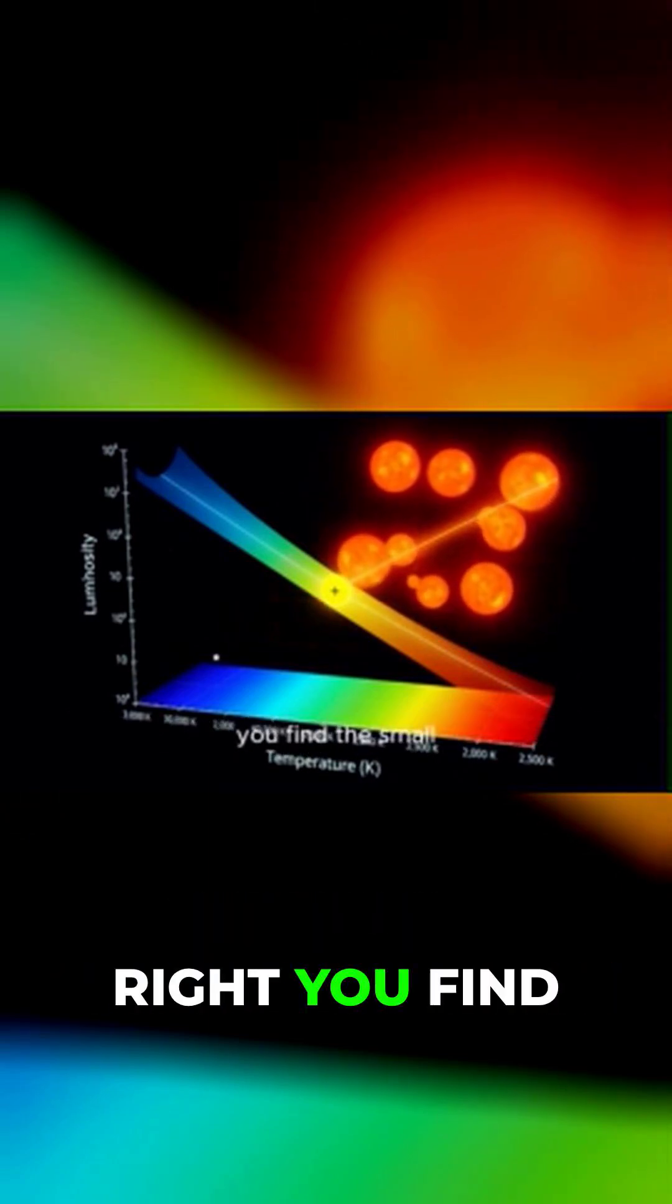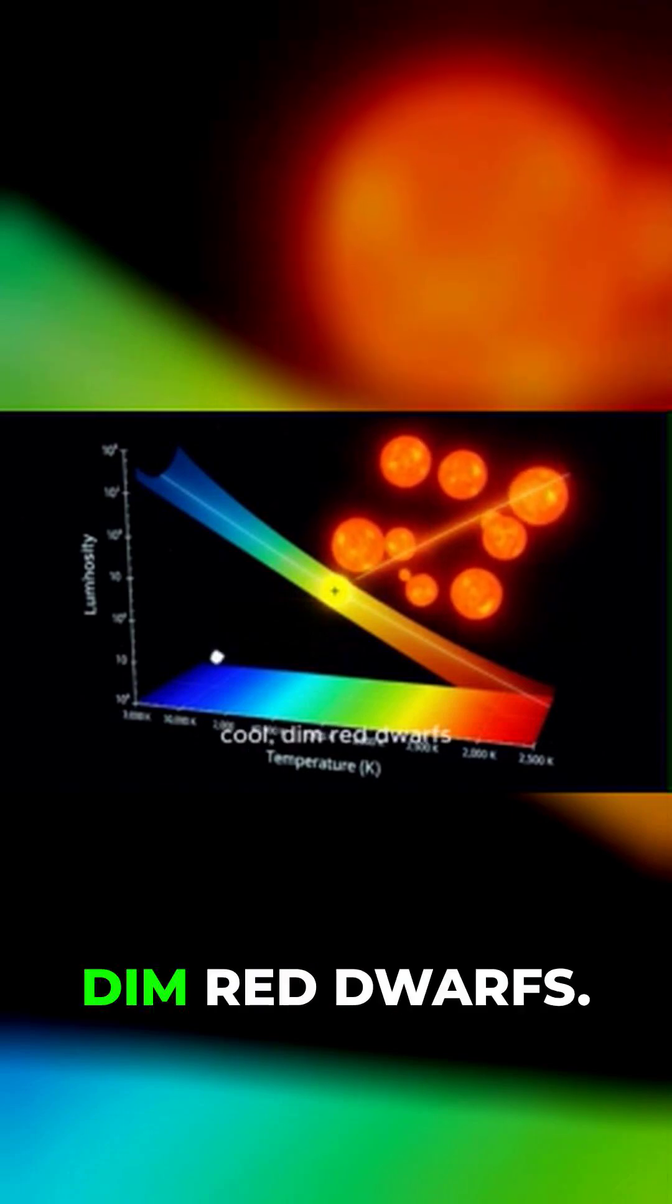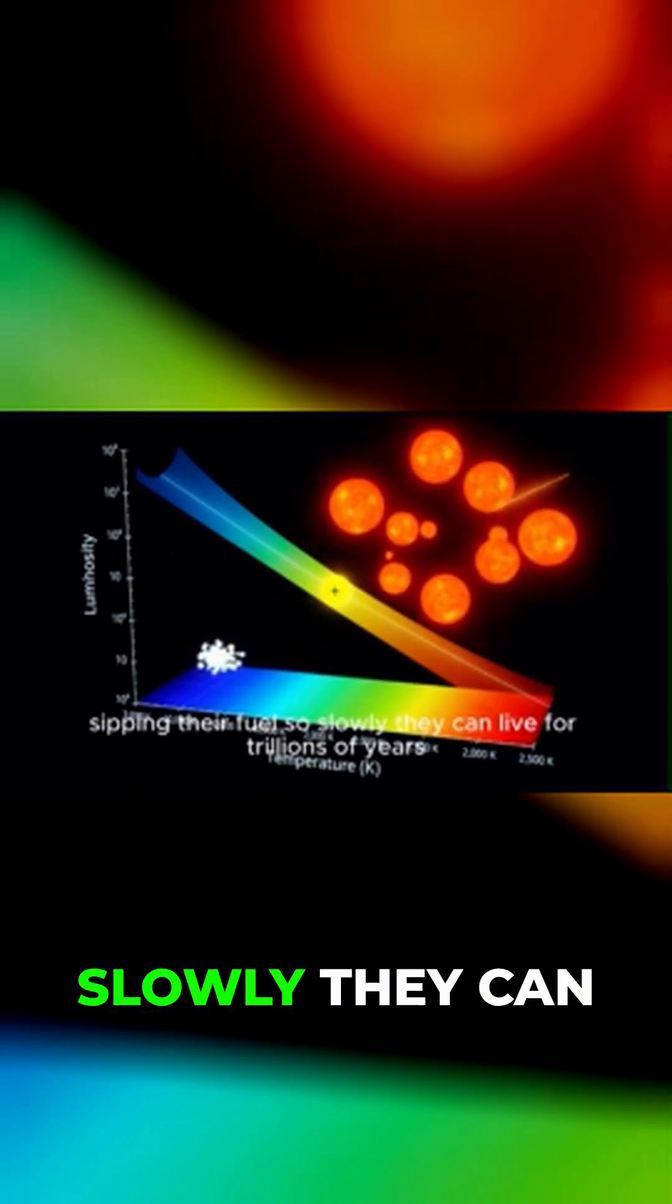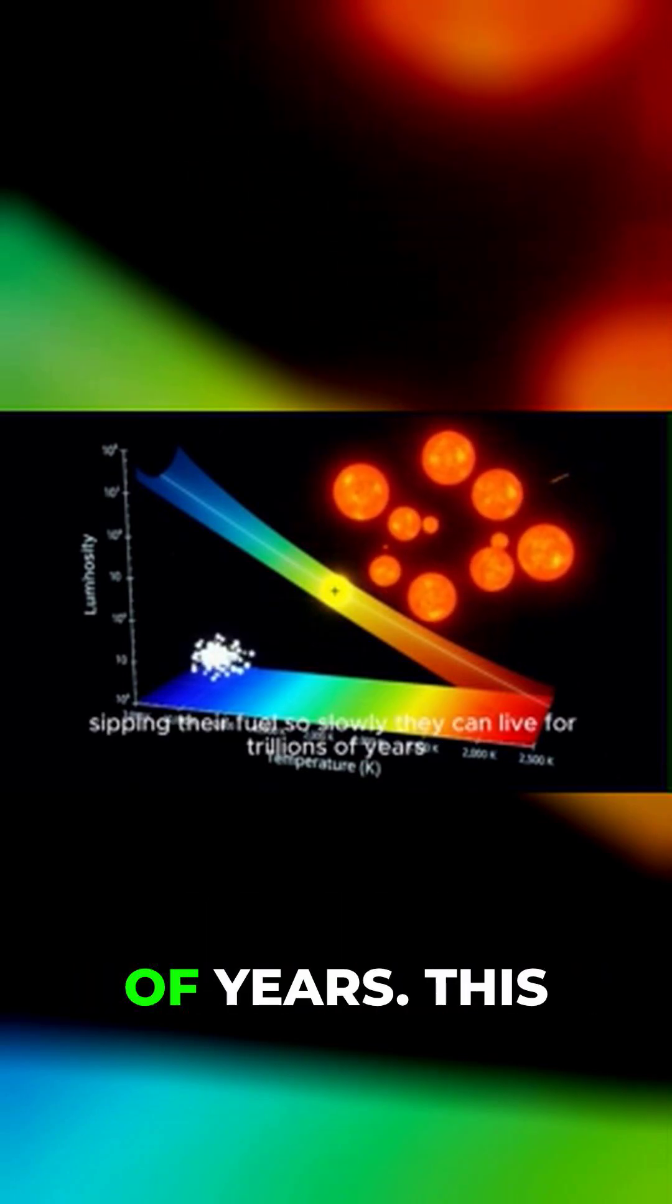Down at the bottom right, you find the small, cool, dim red dwarfs. These are the marathon runners, sipping their fuel so slowly they can live for trillions of years.